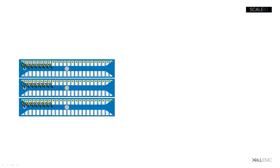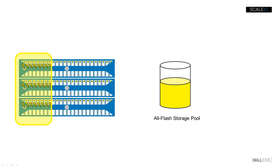This example shows a three-node ScaleIO cluster where each node contains eight SSDs and 16 spinning drives. Since ScaleIO aggregates performance and capacity, this system would likely have two storage pools — one consisting of flash media and the other consisting of spinning media.